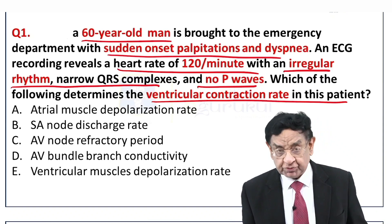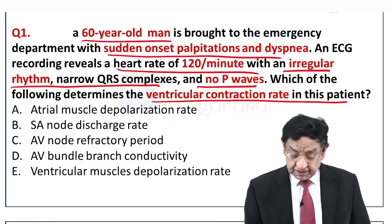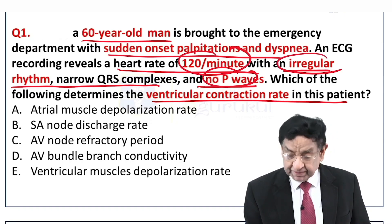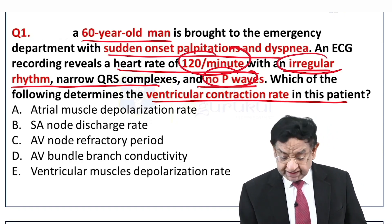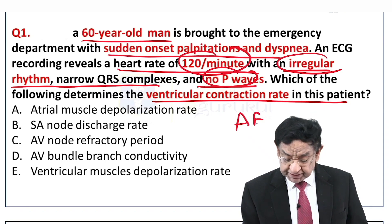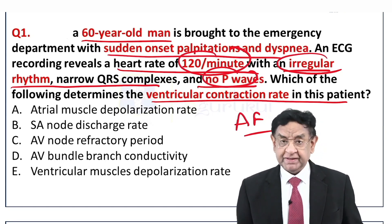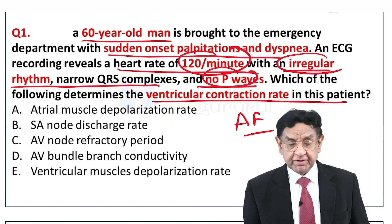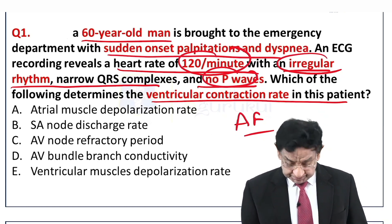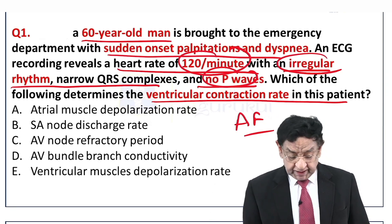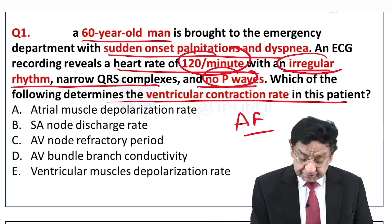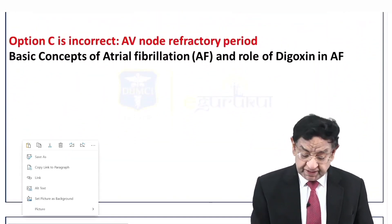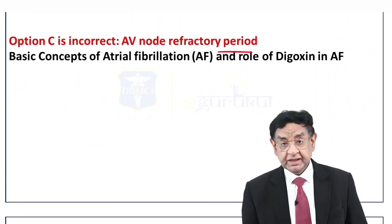Looking at the findings — very rapid ventricular rate, no P-wave, and irregular pulse — we are dealing with atrial fibrillation, because this combination happens only in atrial fibrillation. No other arrhythmia has irregular pulse with no P-wave. The answer to what determines the ventricular contraction rate in this patient is the AV node refractory period.